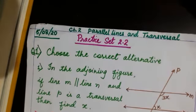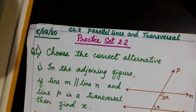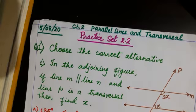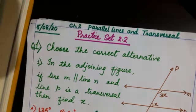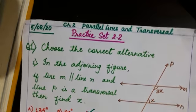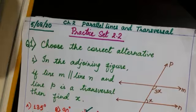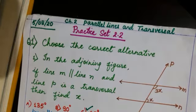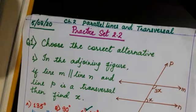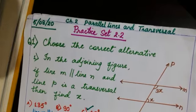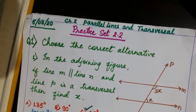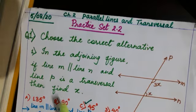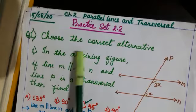Good morning students. We have started chapter 2, Parallel Lines and Transversal. Last period we solved some examples from your textbook pages 10 and 11. Now we are going to start Practice Set 2.2, question 1: choose the correct alternatives.